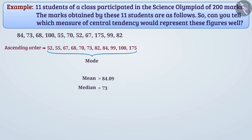Now if we compare the three measurements, we see that most of the students have less than 84 marks. Therefore, no approximate estimation of students' marks is obtained from the number 84.09. This is because the numbers 52 and 175 are the extreme values here.